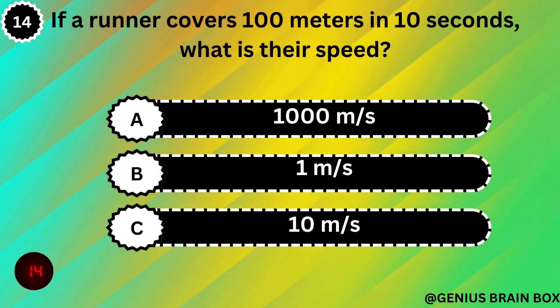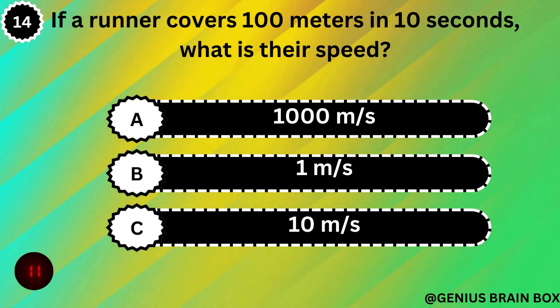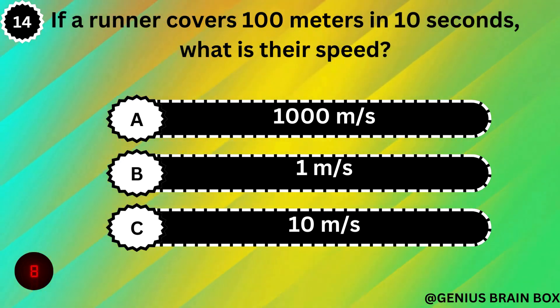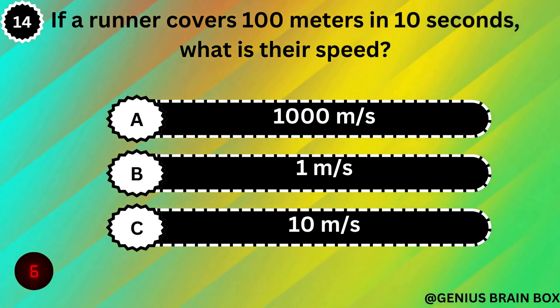If a runner covers 100 meters in 10 seconds, what is their speed? 1000 m/s, 1 m/s, or 10 m/s.